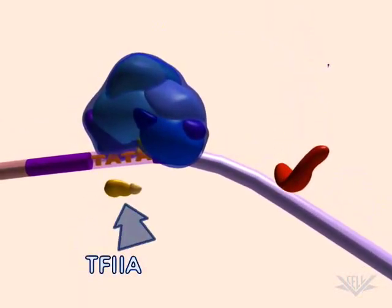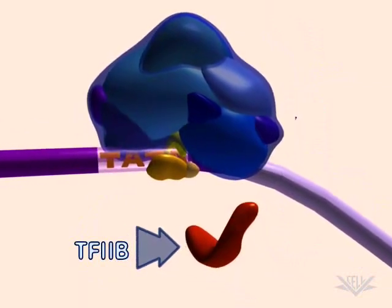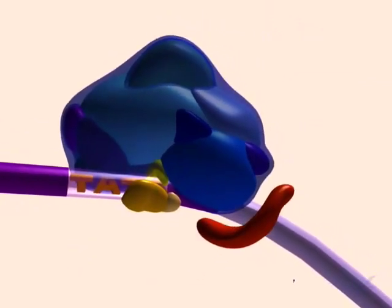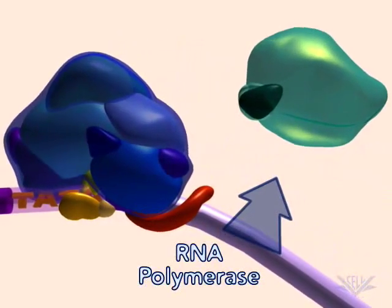Other transcription factors, including TF2A and TF2B, then attach. These complexes prepare the DNA for the successful binding of RNA polymerase.